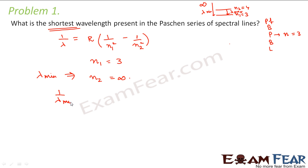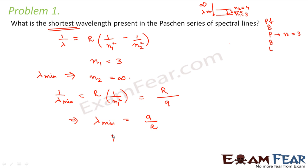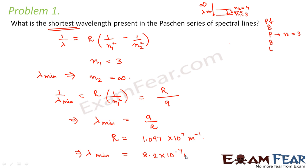Therefore, 1 by lambda minimum is equal to R into 1 by n₁ squared, because 1 by infinity equals 0. So this gives R divided by 9, and therefore lambda minimum is equal to 9 by R. The value of R is 1.097 into 10 to the power 7 meter inverse, giving lambda minimum equal to 8.2 into 10 to the power minus 7 meters. This is the shortest wavelength for the Paschen series.